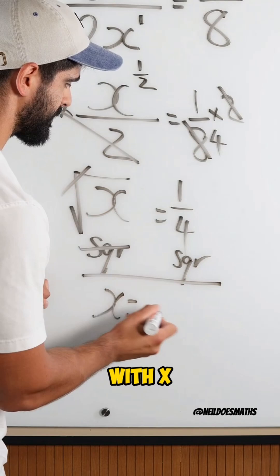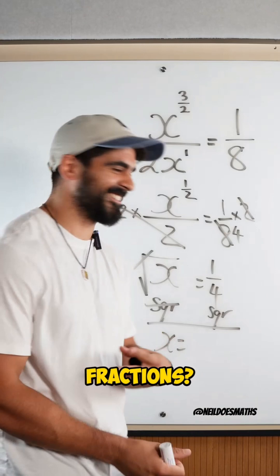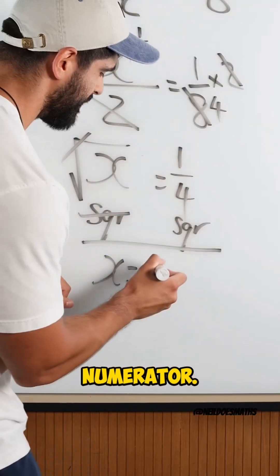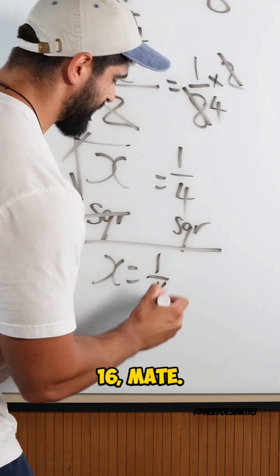Alrighty then. Now we're left with x. Now, when we square fractions, we square the numerator. 1. Square the denominator. 16, mate.